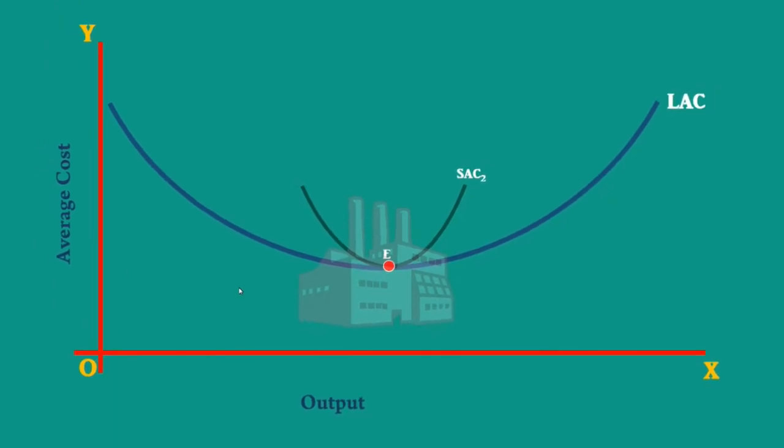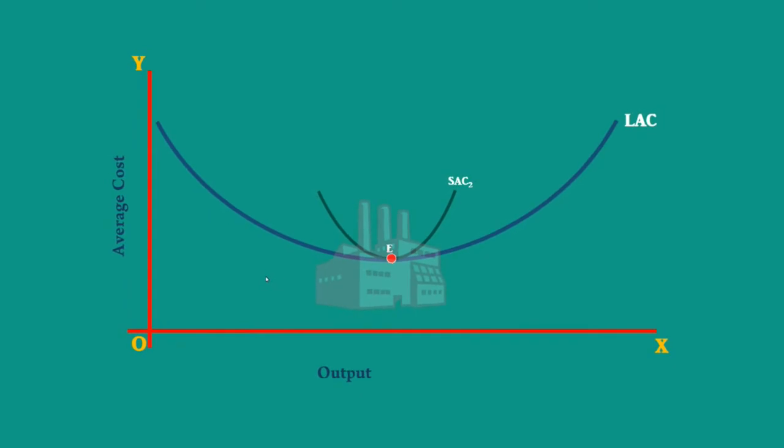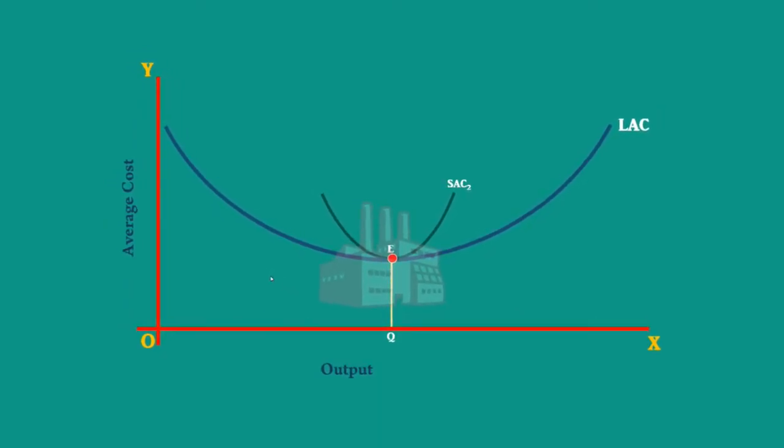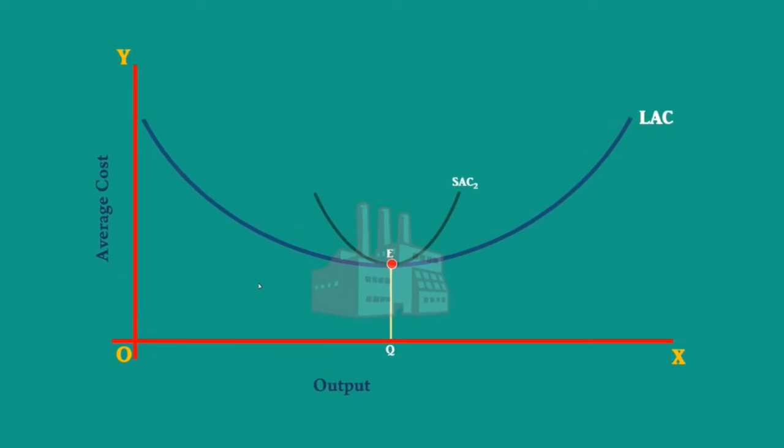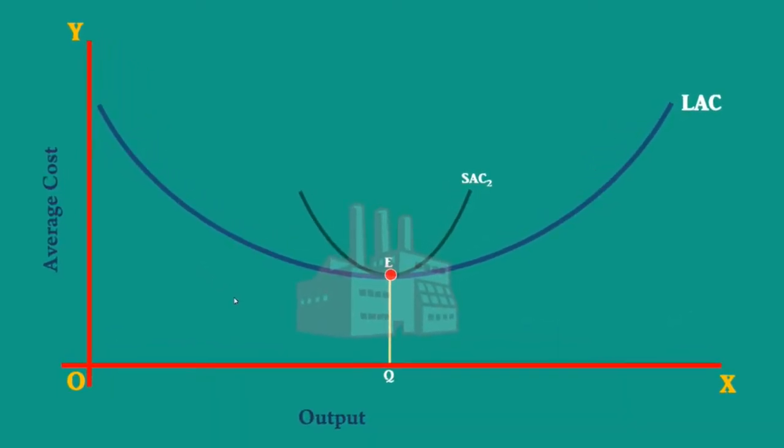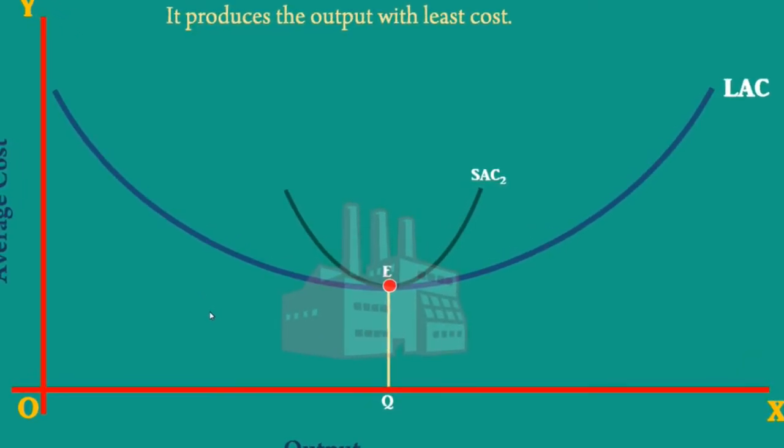According to our definition, this plant is the optimum plant. It produces Q units with the least cost of QE. The firm is optimum because it produces the output with least cost.